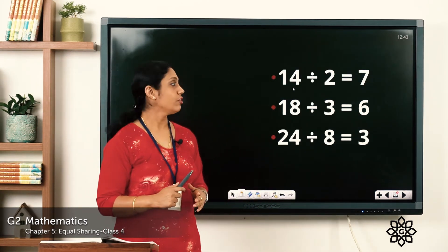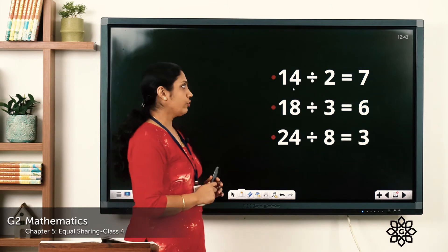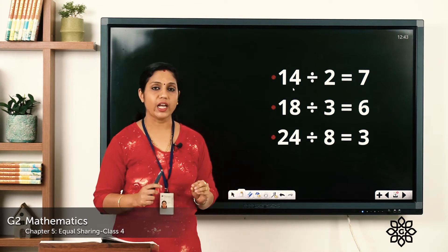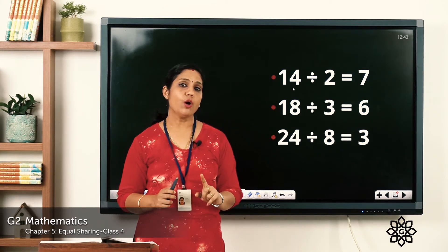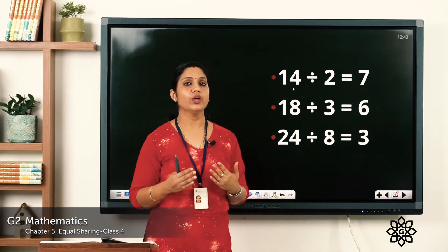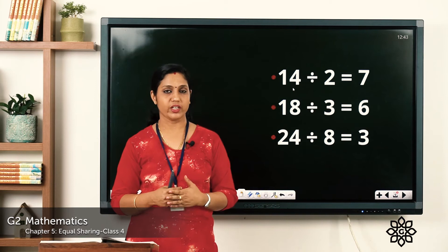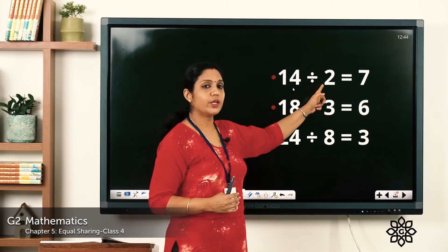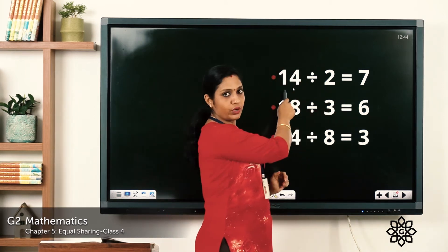Now, 14 divided by 2 is equal to 7. How do we get that? Say the table of 2 and find how many times we reach 14: 2 ones are 2, 2 twos are 4, 2 threes are 6, 2 fours are 8, 2 fives are 10, 2 sixes are 12, 2 sevens are 14. So 14 divided by 2 is equal to 7. Check: 2 sevens are 14 — correct.